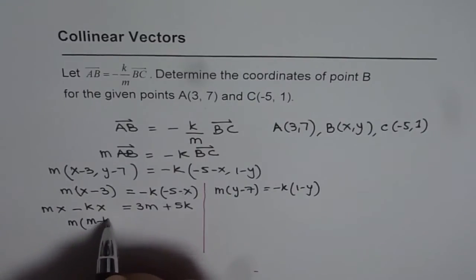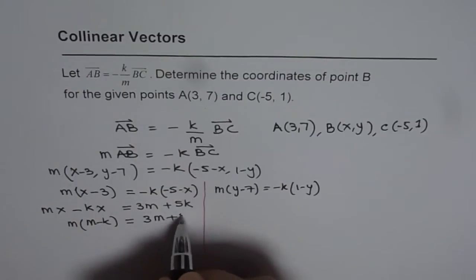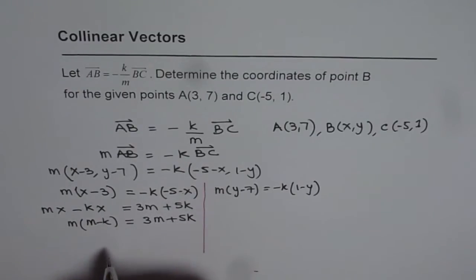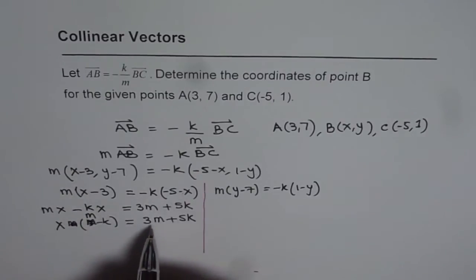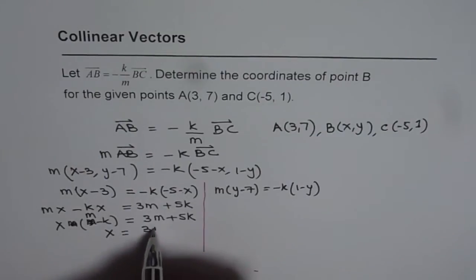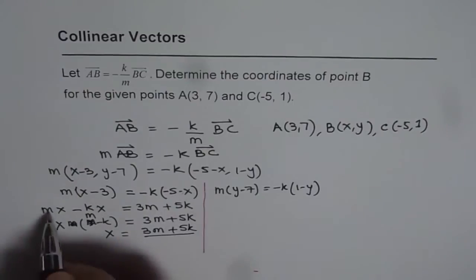We can take X common. So X(M minus K) equals 3M plus 5K. Therefore X equals (3M plus 5K) divided by (M minus K).